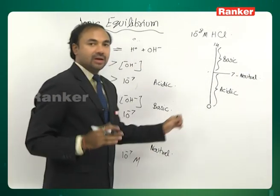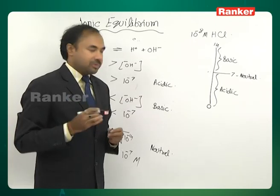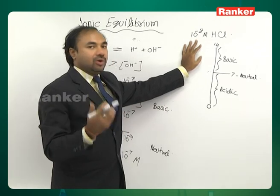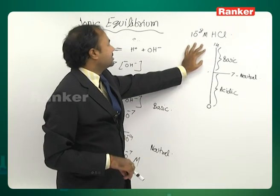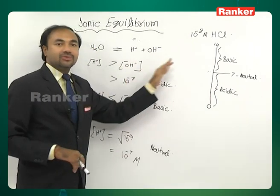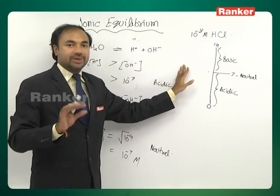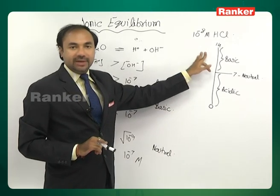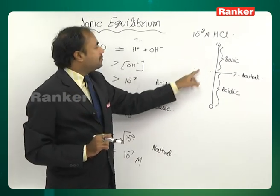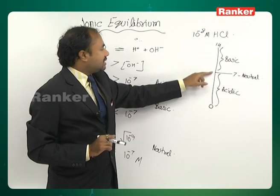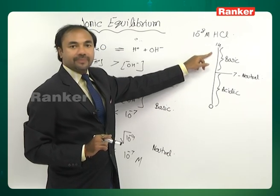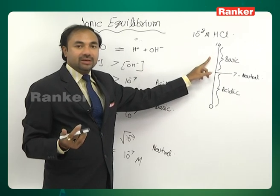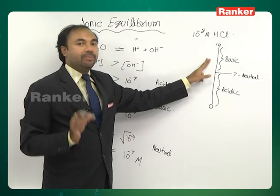Now returning to the 10⁻⁸ molar HCl problem: if we simply substitute into the Sorensen formula, pH = minus log(10⁻⁸) = 8, which falls in the basic region of the pH scale. An HCl solution being basic is ridiculous and impossible, so something is wrong with this approach.